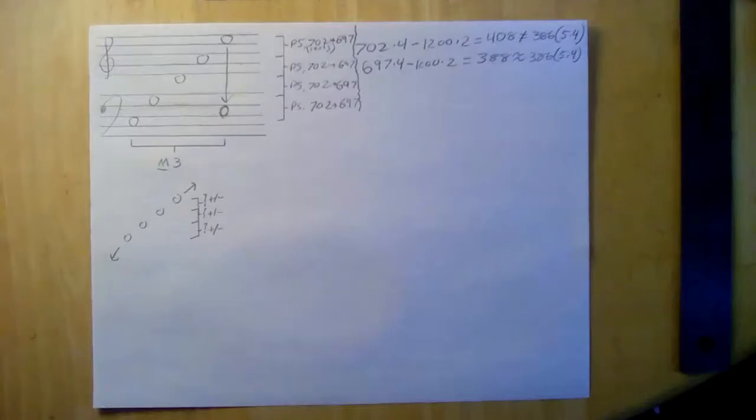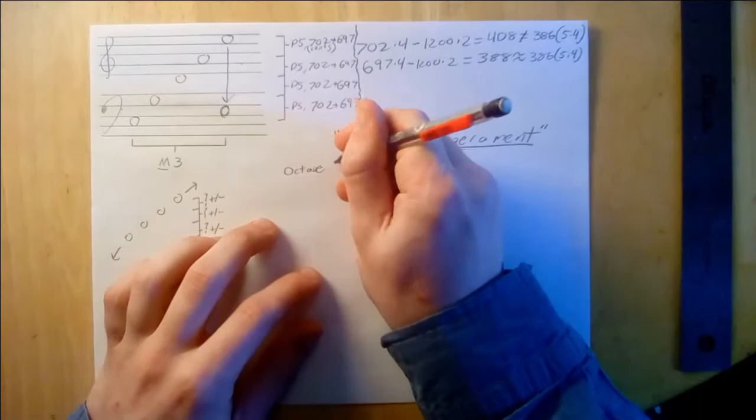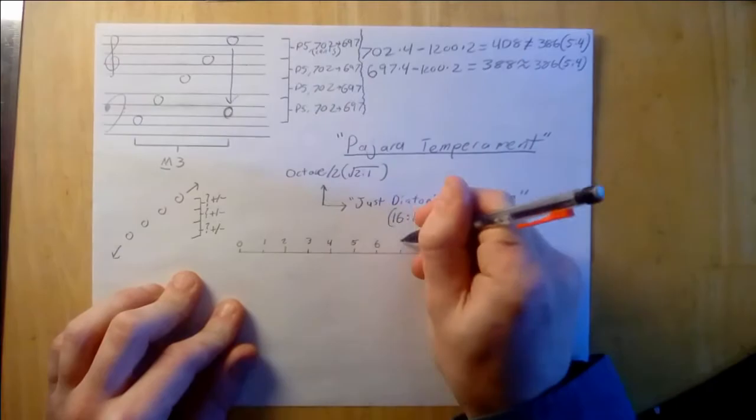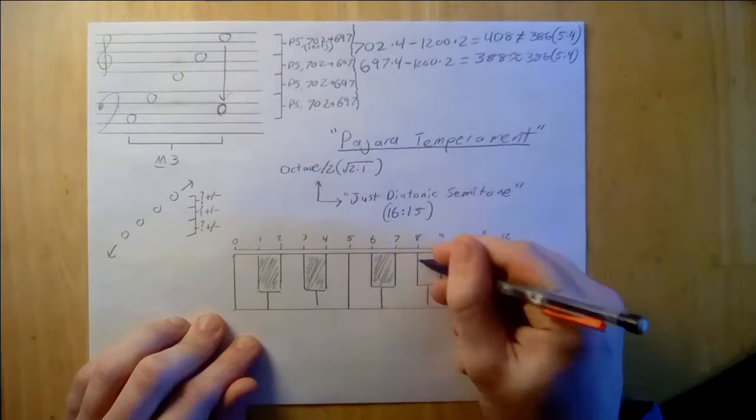One such system is called Pajara temperament. Pajara's period is the half octave, and its generator is an approximation of the just diatonic semitone, which is the frequency ratio 16 over 15. Pajara may be of special note to western musicians since standard western tuning, aka 12 equal divisions of the octave, supports Pajara temperament and its MOS scales.